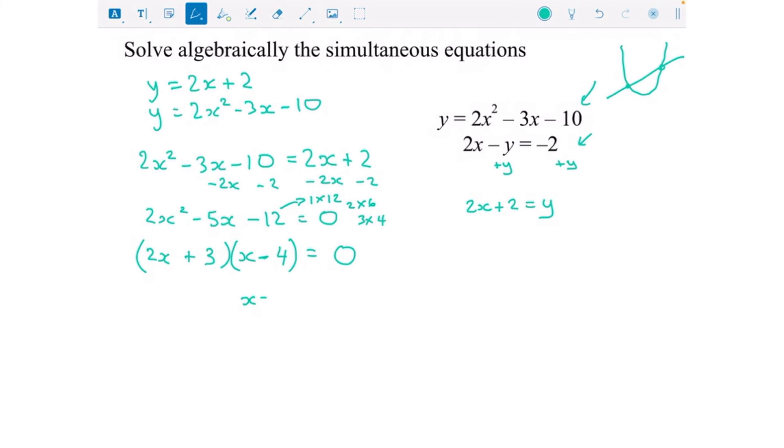So x equals 4 or x equals minus 3 over 2. And that comes from making this bracket equal 0. So we've got our two different x coordinates. Let's make that x1 and x2. And then to find out what y is, I'm going to use the top equation here, this nice simple one. Y is the subject of the formula and use the linear one because it's going to be easier. So I'm going to do 2 lots of minus 3 over 2, which is minus 3, add 2 minus 1. And same with this one, 2 lots of 4 is 8, add 2 is 10. And there's my final answer.